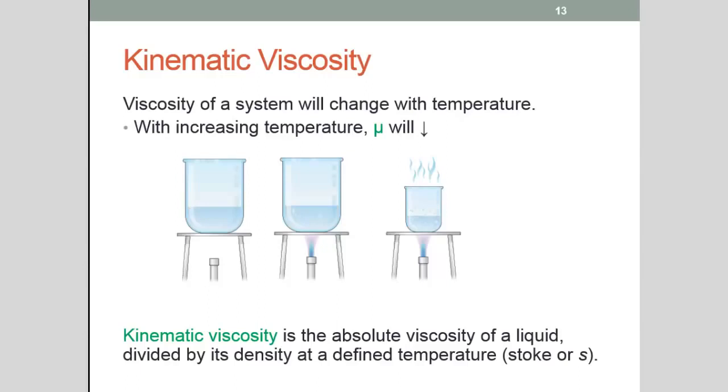Well the viscosity of a system is going to change with temperature. As the temperature increases the coefficient of viscosity will decrease. So for instance take this beaker of water here over a Bunsen burner that's not on. Its coefficient of viscosity will be close to one or will be one.